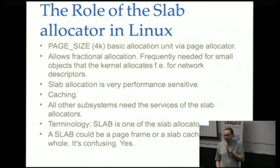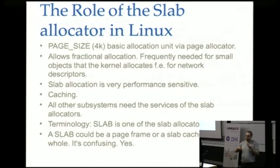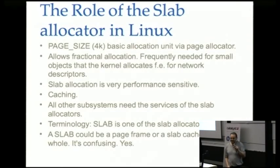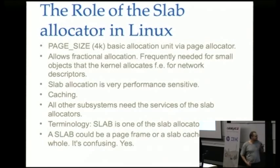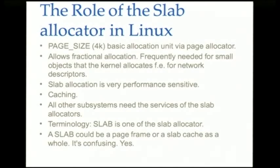There are three slab allocators in the kernel: slab, slob, and slub. When you say 'slab' it could refer to the slab allocator generically, or to one specific allocator called slab, or to a slab — a page frame used for slab allocation. You have to be careful about what you mean when you talk about a slab, especially in email communications. This terminology has been that way forever and nobody has figured out a better one.